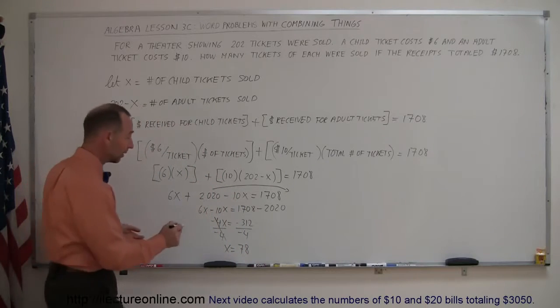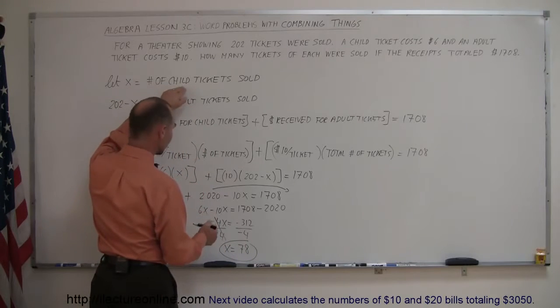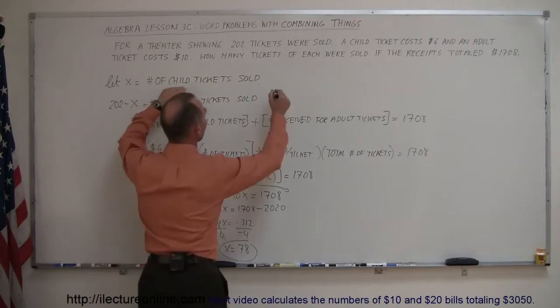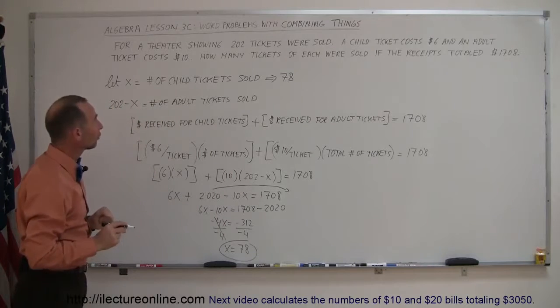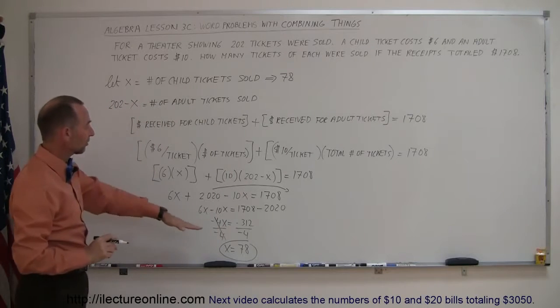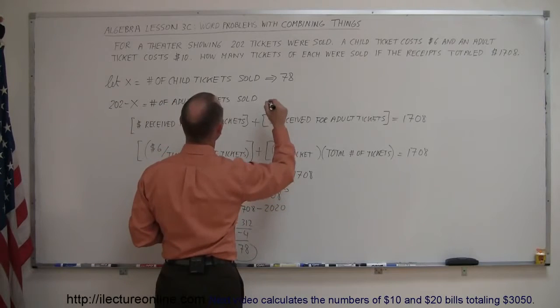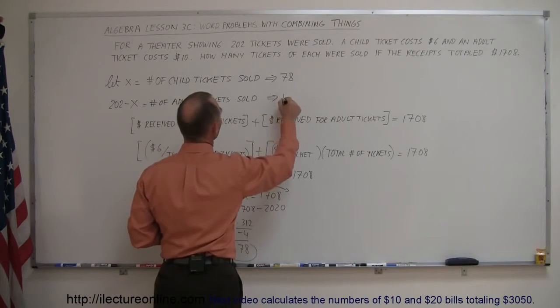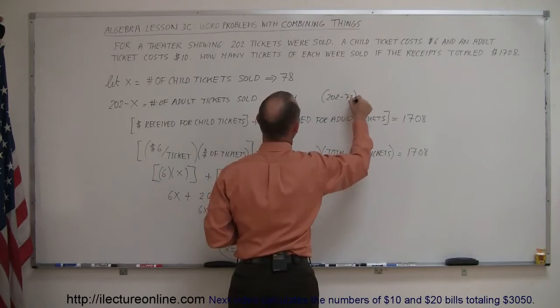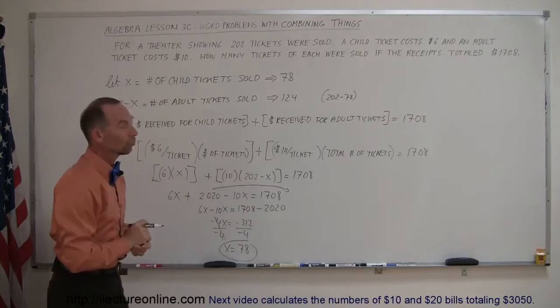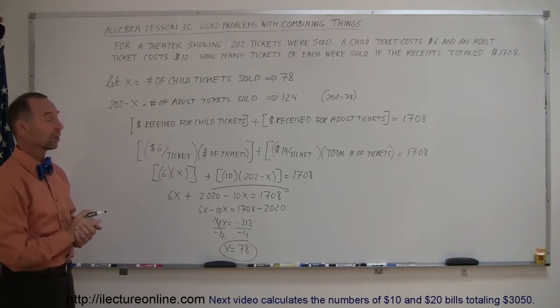Now, what does that define? What is x defined as? Let's go over here. It says x equals the number of children's tickets. x equals 78. That means we sold 78 children's tickets, and if the total was 202, we subtract 78 from that. That means 124 adult tickets were sold. So, that would be the same as saying 202 minus 78, and that is indeed 124. And so, that's how we determine how many of these tickets were sold.